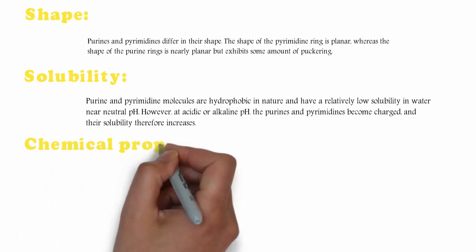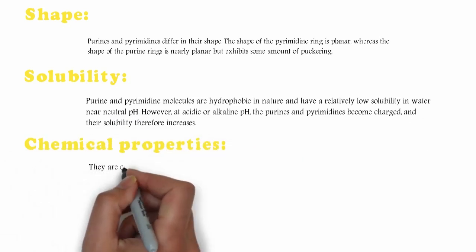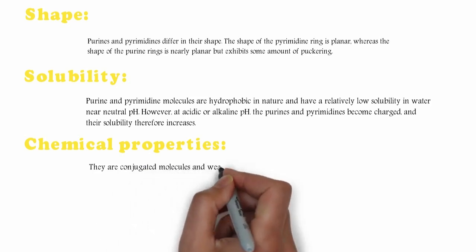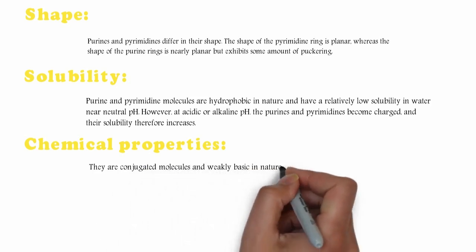Chemical Properties. Purines and Pyrimidines are conjugated molecules and weakly basic in nature.